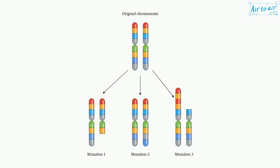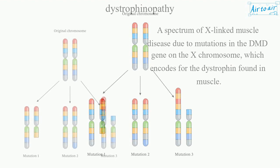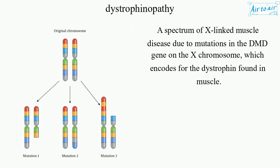Dystrophinopathy. A spectrum of X-linked muscle disease due to mutations in the DMD gene on the X chromosome, which encodes for the dystrophin found in muscle.